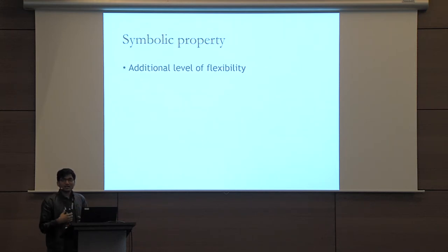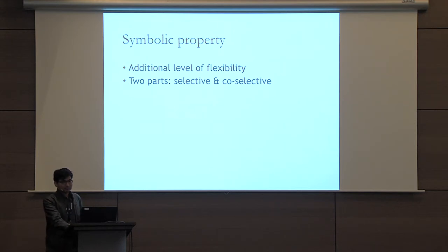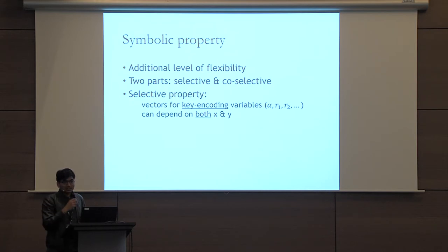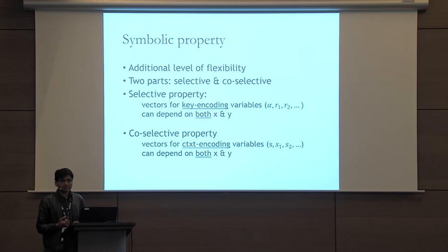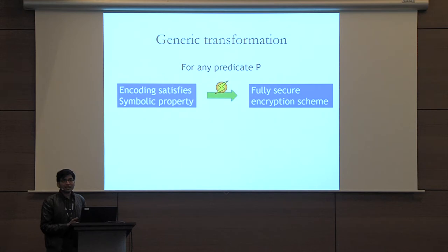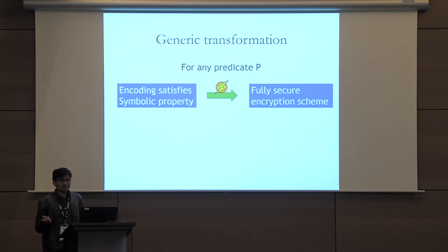The symbolic property allows an additional level of flexibility — it consists of two parts: selective and co-selective. For the selective property, the vectors for key encoding variables (alpha, r1, r2, and so forth) can depend on both x and y. For the co-selective property, the vectors for ciphertext encoding variables can depend on both x and y. Once we have an encoding for any predicate P that satisfies the symbolic property, we can use it to build a fully secure encryption scheme for P in asymmetric prime-order bilinear maps.